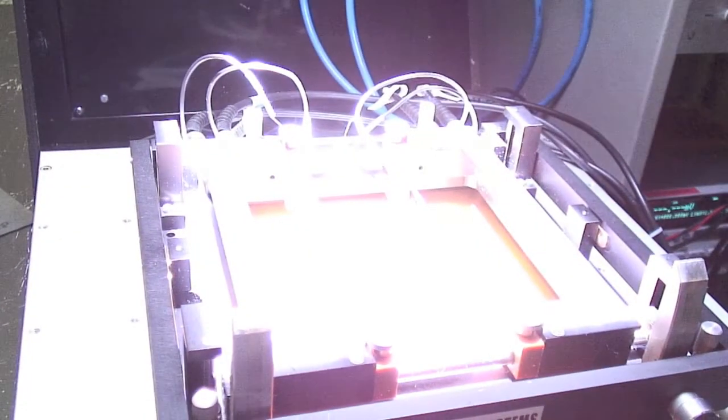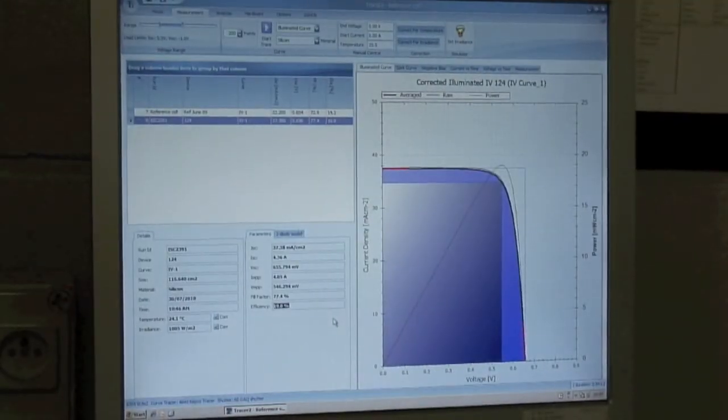Current voltage curves are measured under AM 1.5 solar spectrum.